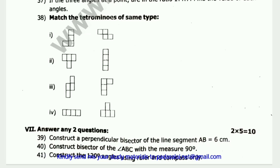Construct a perpendicular bisector of the line segment AB of 6 cm. Construct a bisector of the angle ABC with the measure 90 degrees. Construct 120 degrees. I am using a ruler and a compass. If you have 3 questions, you will need 2 of them.